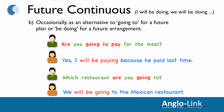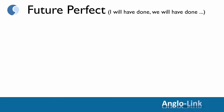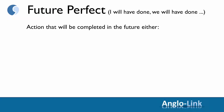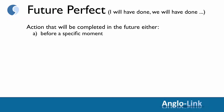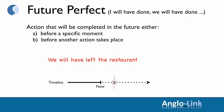Moving on to the next future tense: future perfect — I will have done, we will have done, etc. As you know, this refers to an action that will be completed in the future, either before a specific moment or before another action takes place. For example: we will have left the restaurant by midnight.